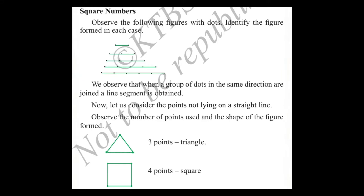Next: observe the following figures with dots. Identify the figures formed in each case. First one is a straight line, second one with three points is a triangle, and with four points that is a square.